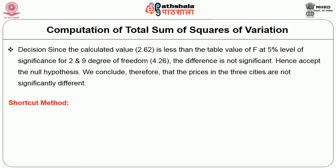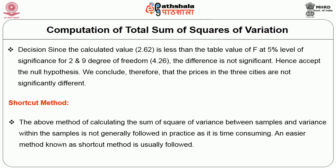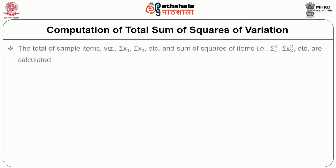Let us discuss the shortcut method. The above method of calculating the sum of squares of variance between samples and variance within the sample is not generally followed in practice as it is time consuming. An easier method known as the shortcut method is usually followed. The procedure is as follows: first, compute the total of sample items (ΣX₁, ΣX₂, etc.) and the sum of squares of items (ΣX₁², ΣX₂², etc.).